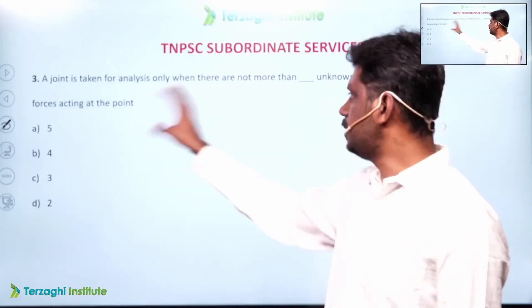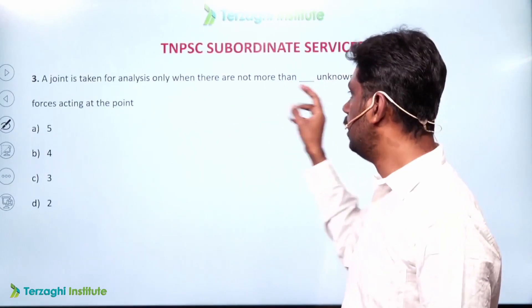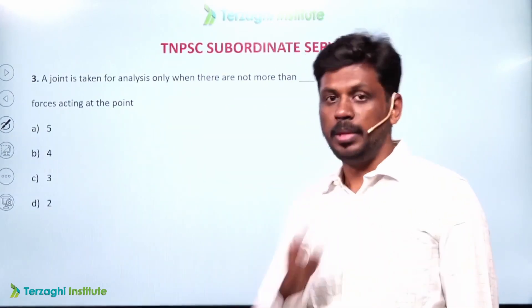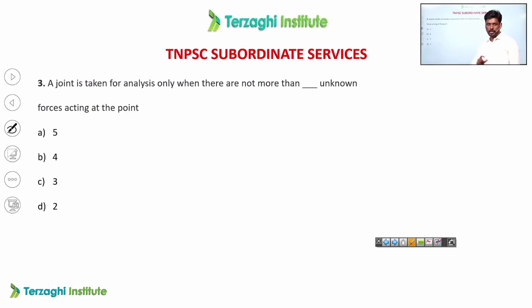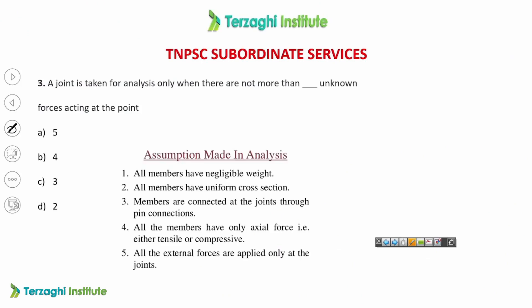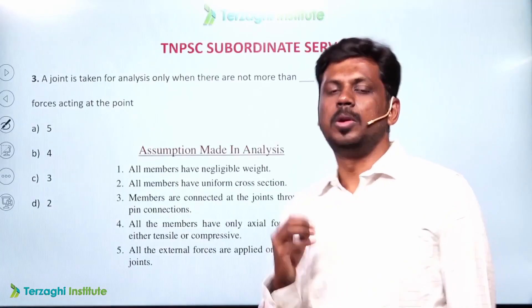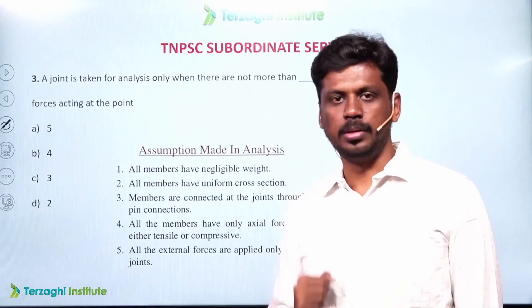A joint is taken for analysis when there are not more than two unknown forces acting at a point. The method of joints is based on truss assumptions: all members have negligible weight and all members are pin-jointed. In a joint analysis, there are two unknown forces.